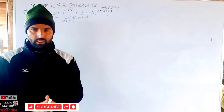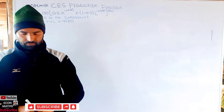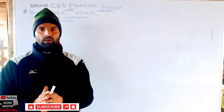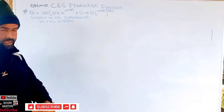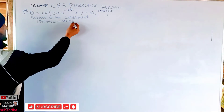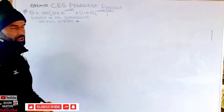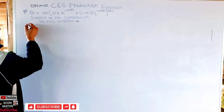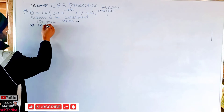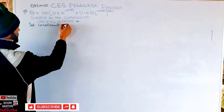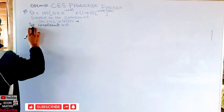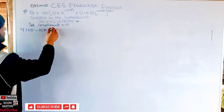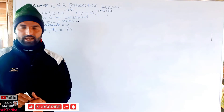We will use the Lagrangian function method to optimize this CES production function. The first step is to form the Lagrangian function. We take the constraint and set it equal to zero, so the constraint 10K + 4L = 4100 becomes 4100 − 10K − 4L = 0.